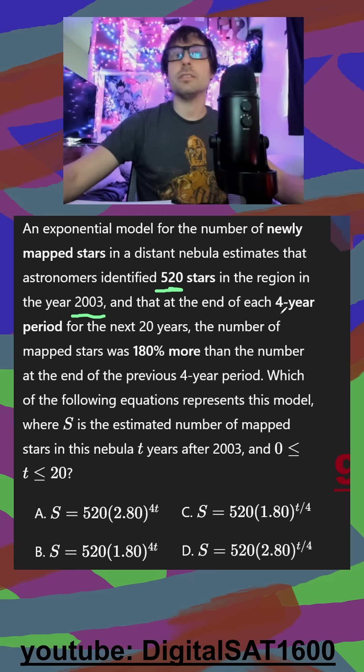And at the end of each four-year period for the next 20 years - so if it happens every four years for 20 years, I'm thinking of a number five, but we'll get to that - the number of mapped stars was 180% more than the number at the end of the previous four-year period.